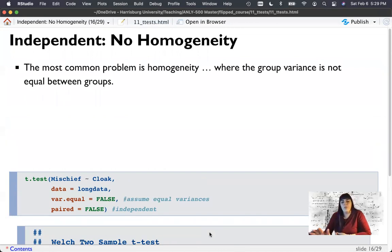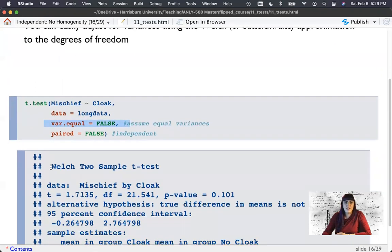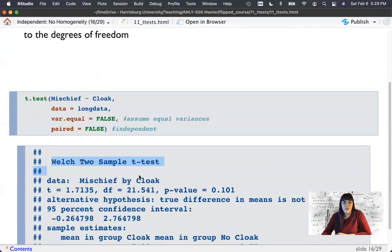Now, one of the general problems that you'll have with t-tests is homogeneity, especially with small sample sizes, where our group variance is not equal. So what we can do is very easily change var.equal to false. It'll say it's the Welch two-sample t-test. This is actually the Welch-Satterthwaite approximation. And so what it does is it changes the degrees of freedom. So you lose power for the imbalance in variance. So the larger the imbalance in variance, the smaller degrees of freedom, which reduces power.